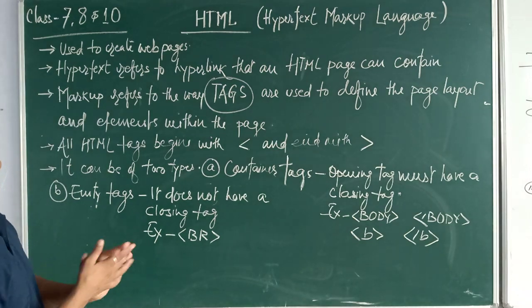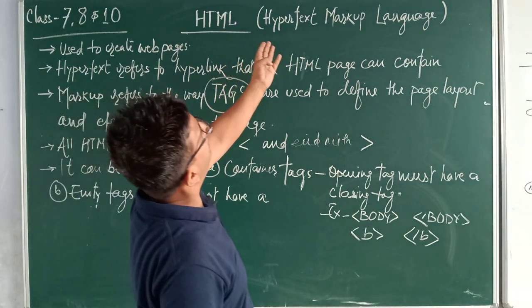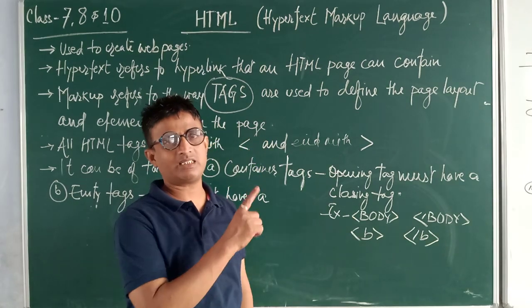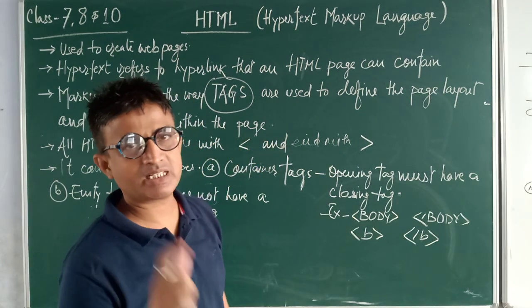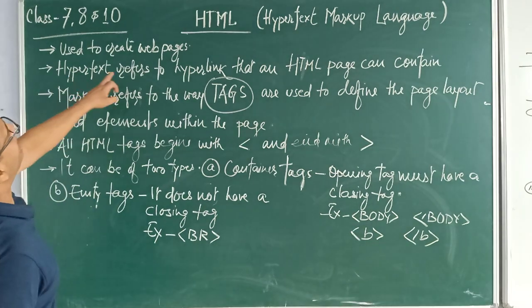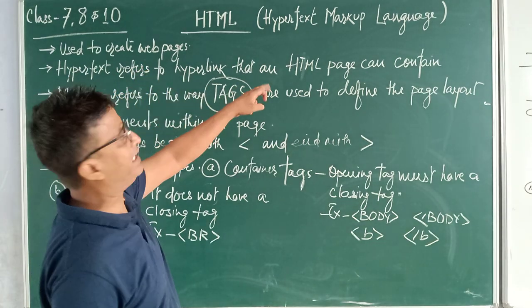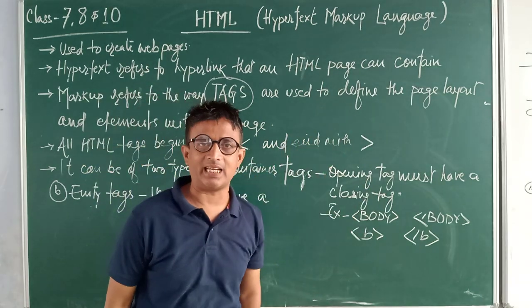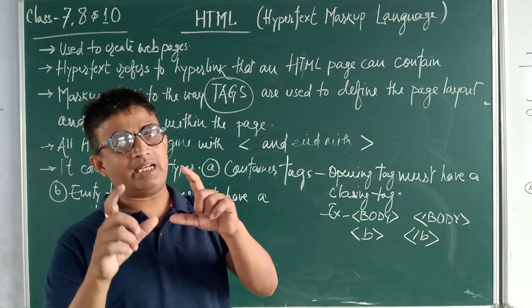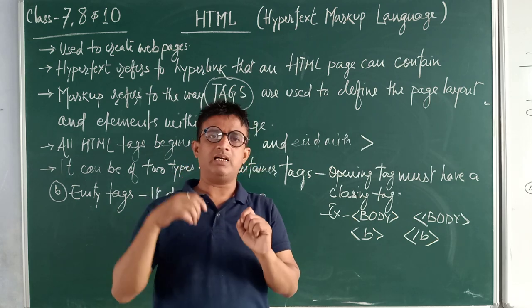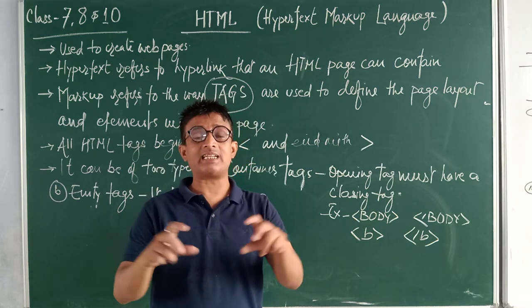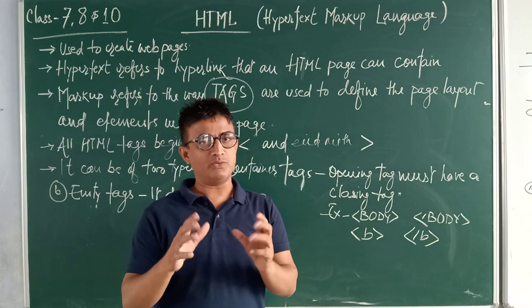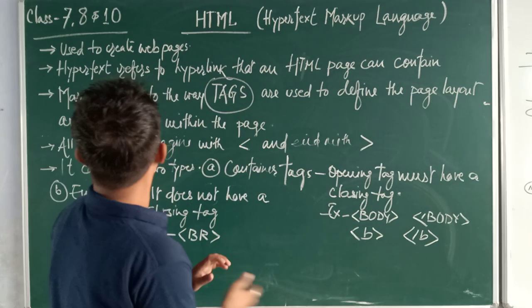Now in HTML we have two main parts. One part is hypertext, another part is markup. What is hypertext? Hypertext refers to hyperlinks that an HTML page can contain. When on a browser an HTML page is marked, it gets highlighted. Those texts are known as hypertext.